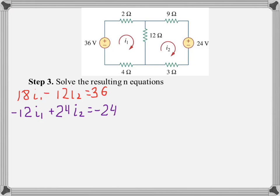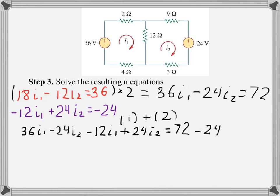What we can do is multiply the first equation by 2. And we're going to have 36I1 minus 24I2 equals 72. Then we'll add the first equation to the second equation. So this is the equation we got.